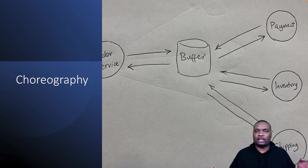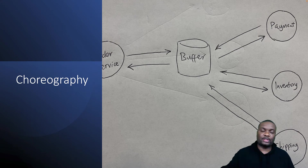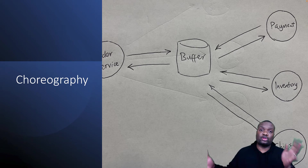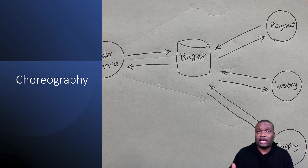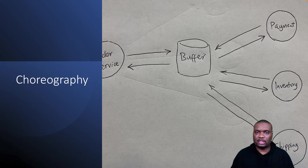This allows you to scale independently - you can have different instances and different counts of each individual service. If the inventory service has too much work, you can independently scale it up to support the workload. If the shipping service has too many things to do, you can scale that up independently without tying it to all the other services. This is the new way of doing things.